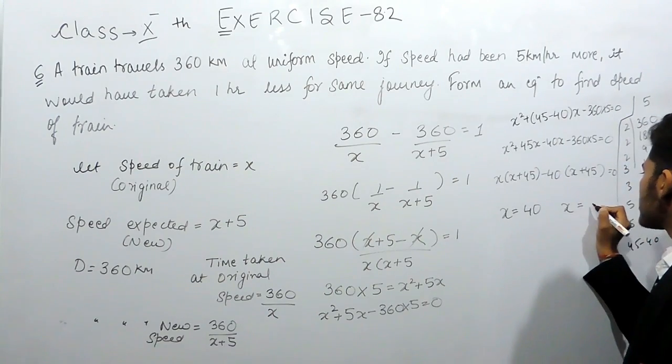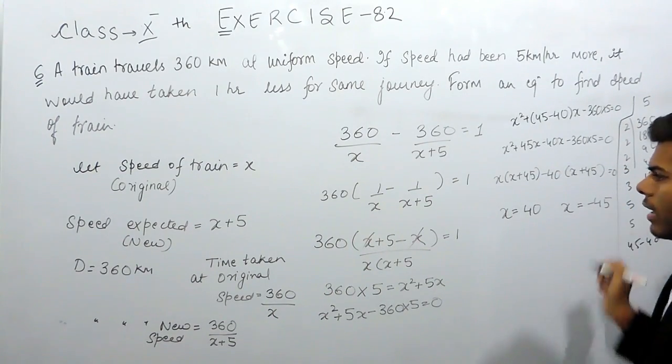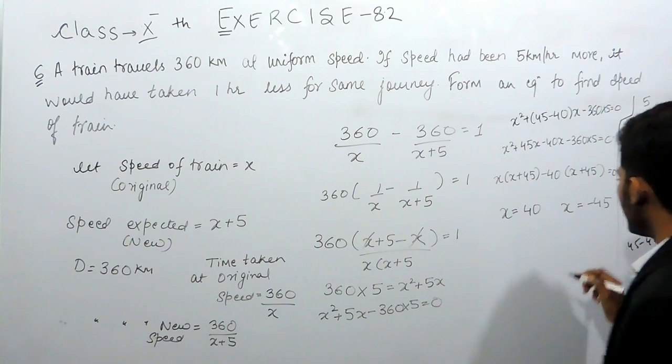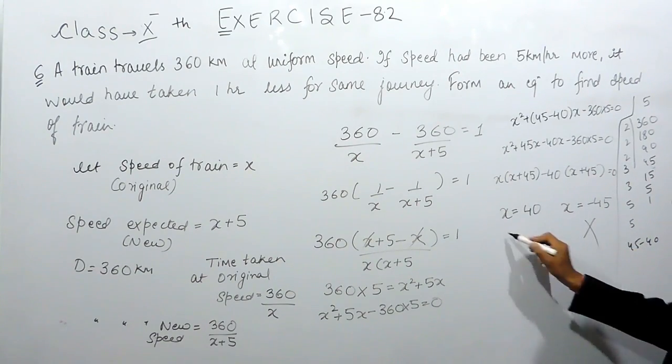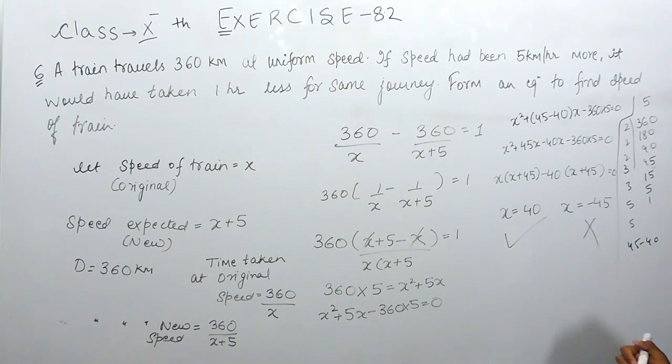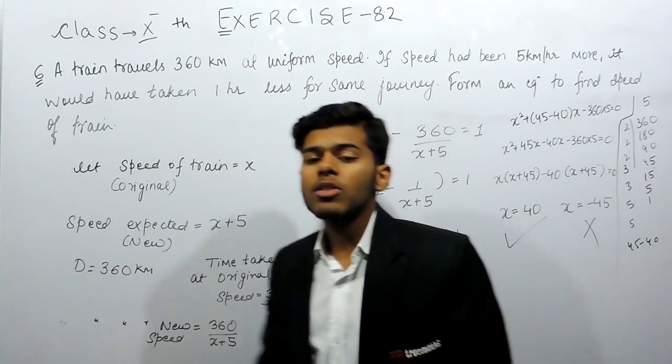The x was the speed of the train, so speed cannot be negative. The speed of train was 40 kilometer per hour. This is how you can solve this question.